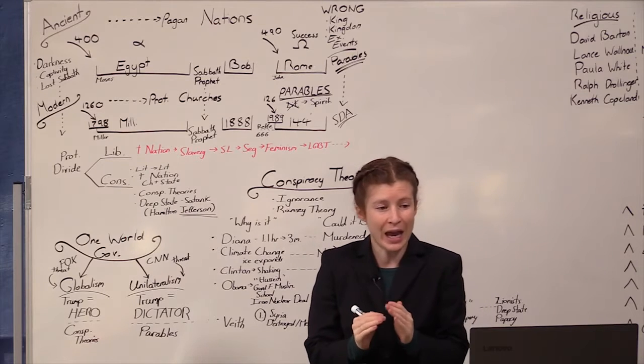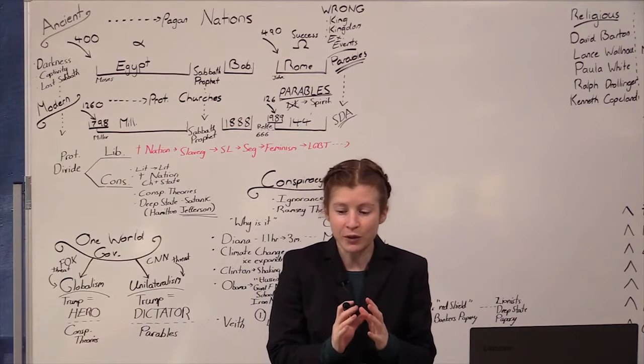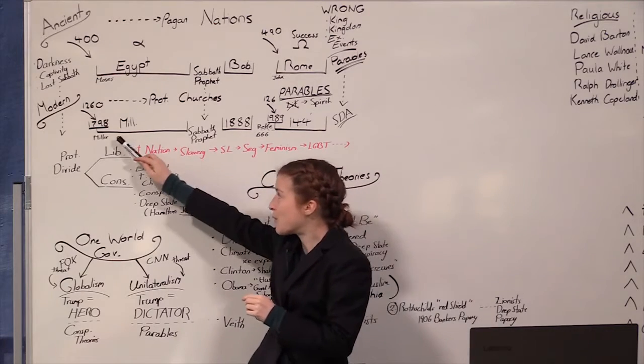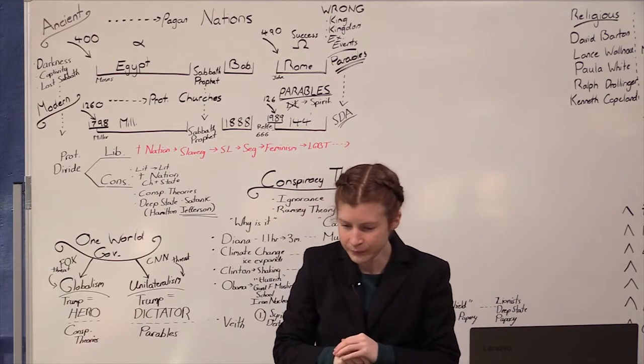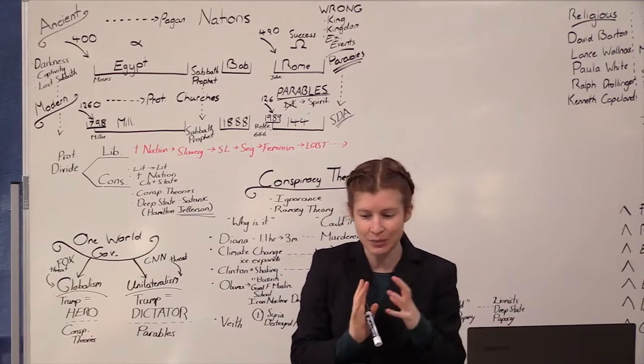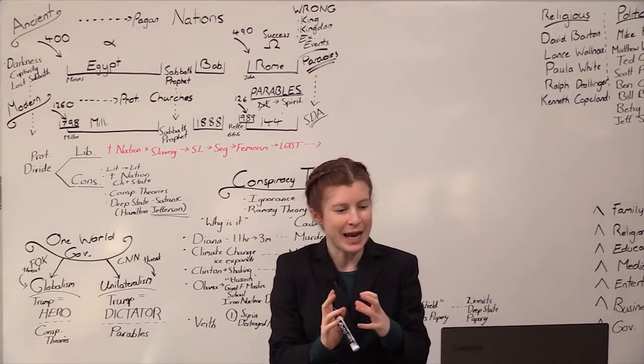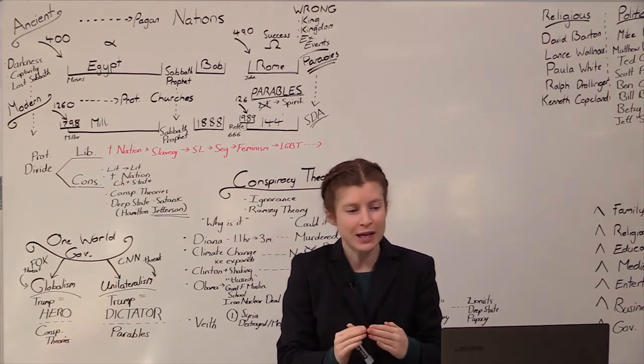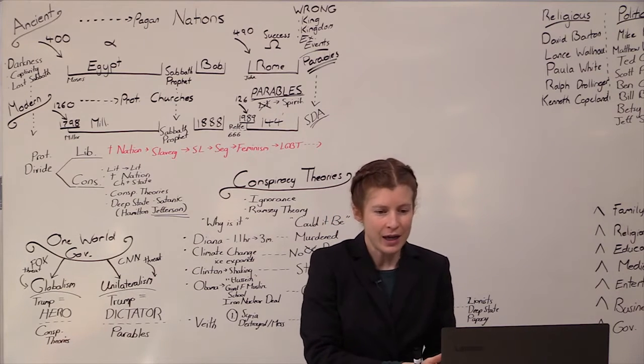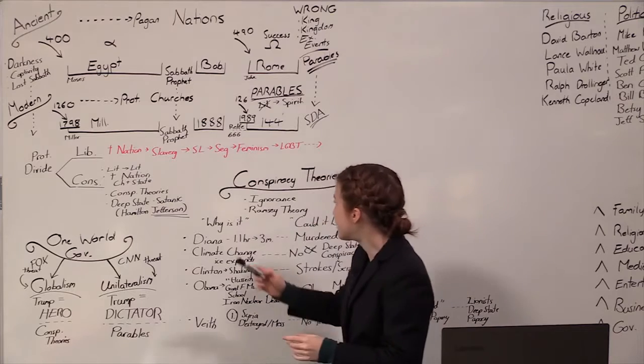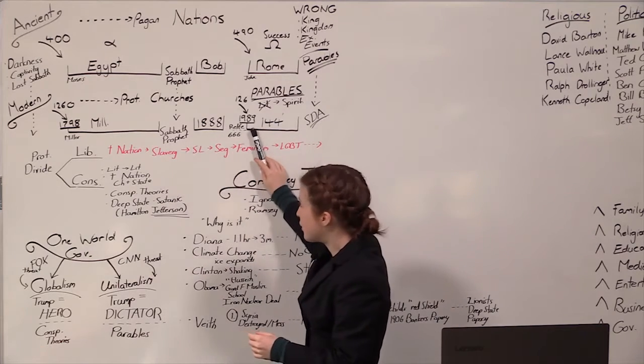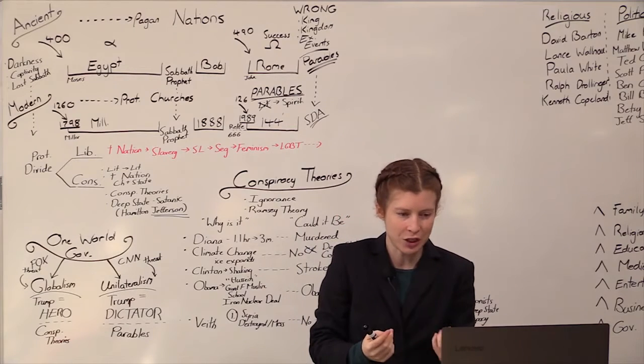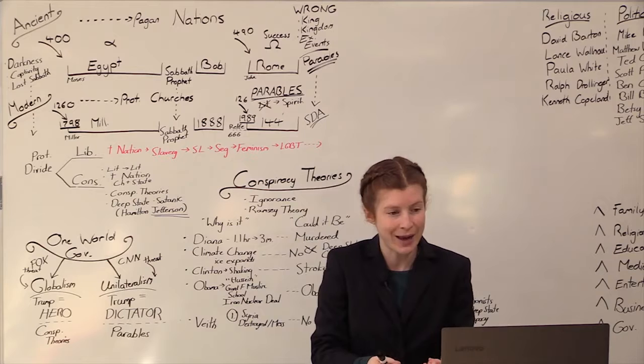For about a month we've been comparing ancient and modern. As we revise, I particularly want to look at the 1844 history, 1888, but also what's happening externally in the United States. Ancient came out of pagan nations, modern came out of Protestant churches. You compare and contrast using the rules of parable teaching.